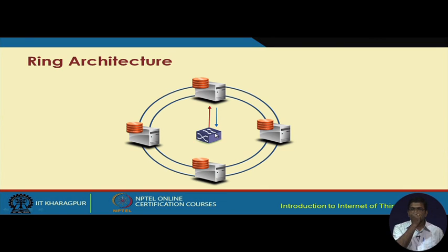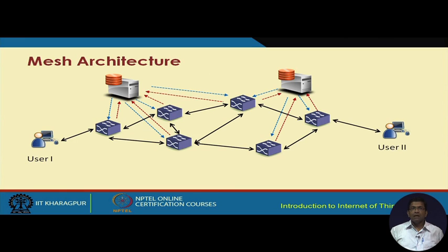Then we have the mesh architecture. Mesh increases reliability — for instance, two different switches can be connected to a single controller, so if one goes down there is another that can take over. This basically improves fault tolerance and improves the reliability of the network in the mesh architecture.